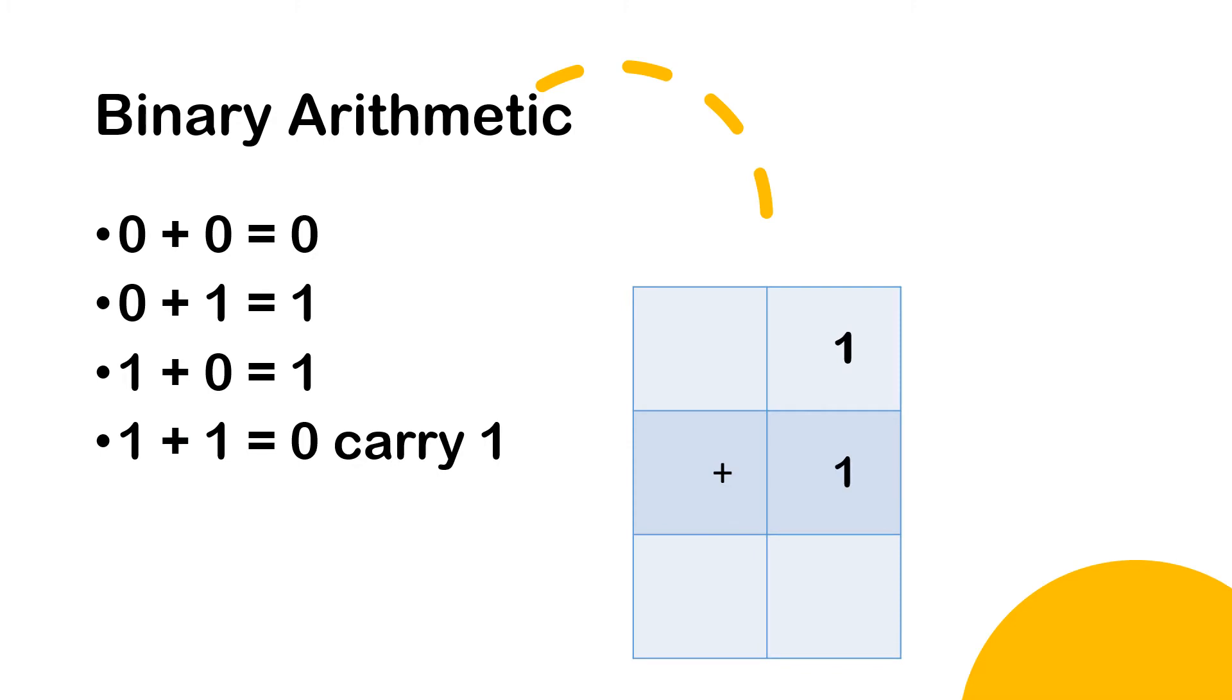Now before we get into what we call binary counting, let's take a brief look at binary arithmetic. So you would have here for a start 0 add a 0 that would be 0. 1 add to a 0 that would be a 1. 0 add to a 1 that's a 1. And 1 add 1, the result would be 0 carry a 1. Now I've rewritten here in a different format. So it's 1 add 1, answer is 0 and we carry forward a 1.